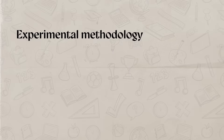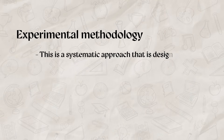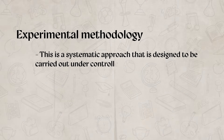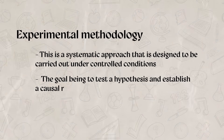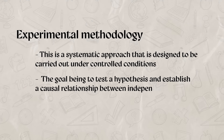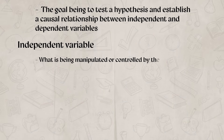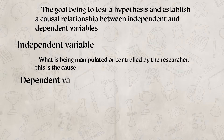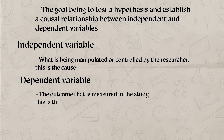Getting back to the research methods, let's start with the experimental methodology. This is a systematic approach designed to be carried out under controlled conditions, with the goal of testing a hypothesis and establishing a causal relationship between independent and dependent variables. An independent variable is what is being manipulated or controlled by the researcher — this is the cause — while the dependent variable is the outcome that is measured in the study, so this is the effect.